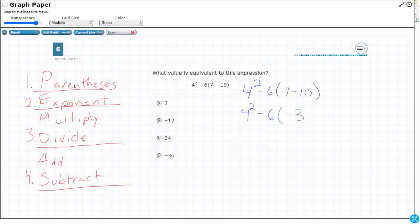So what is seven minus ten? Well, that's going to be negative three. So now what we have done is we have collapsed the parentheses. So that's our first step.